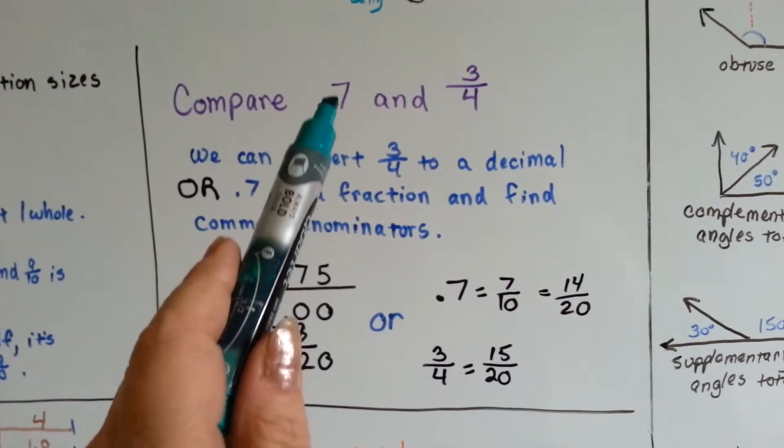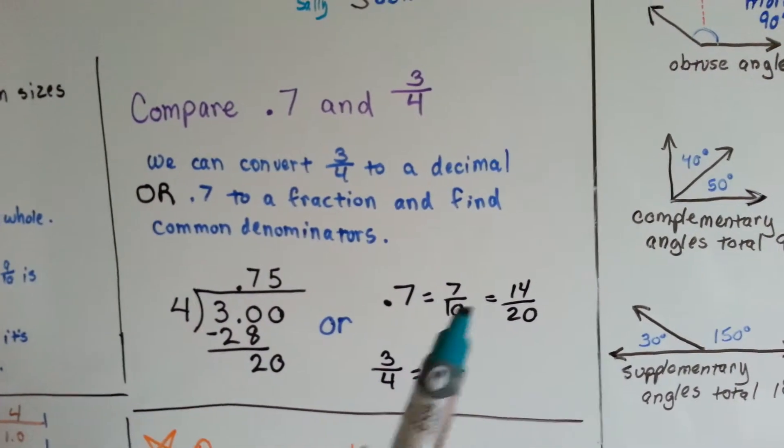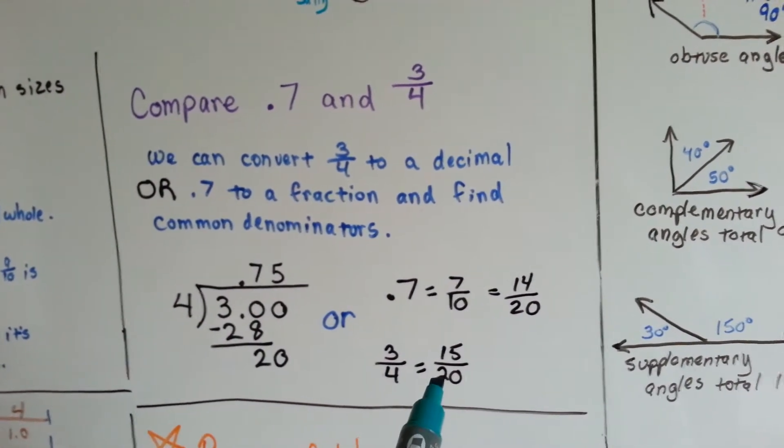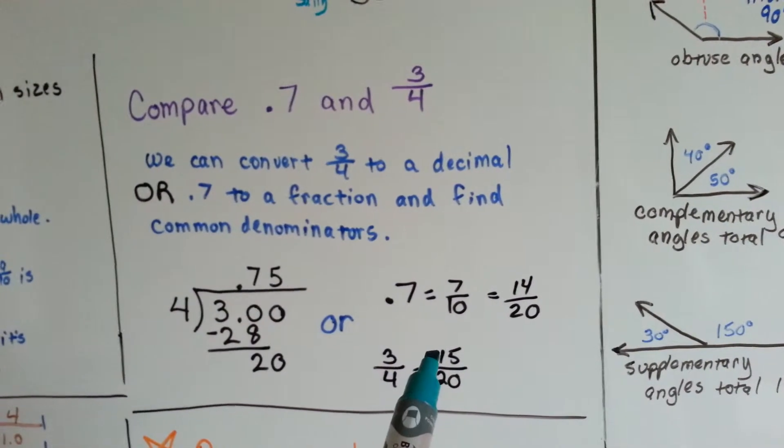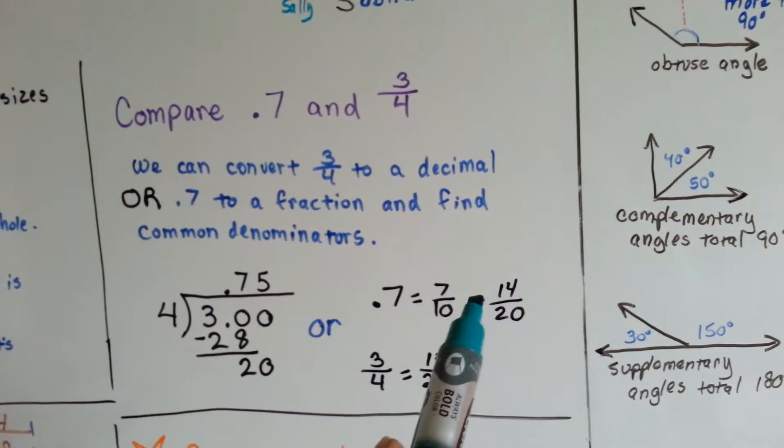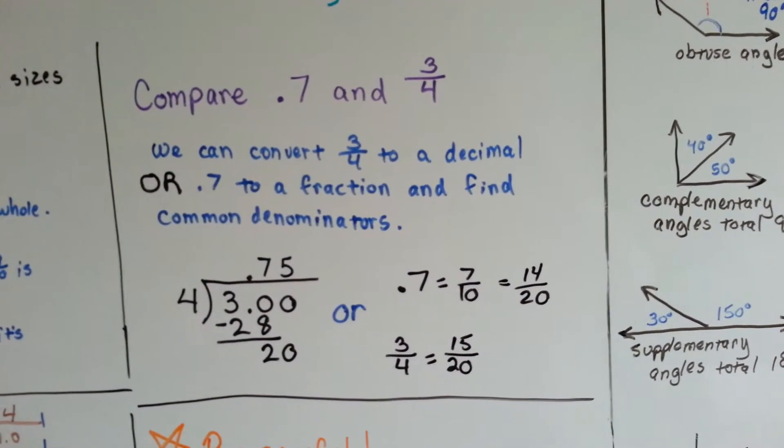If we change this to a fraction, we know it's 7 tenths. We need to get the denominators the same, so we get them to meet at 20's house. 4 needs to be multiplied by 5 to become 20. 3 is jealous and wants to be multiplied by 5 and becomes a 15. 10 just multiplies by 2, so 7 gets multiplied by 2. We can see 15 twentieths is bigger than 14 twentieths.